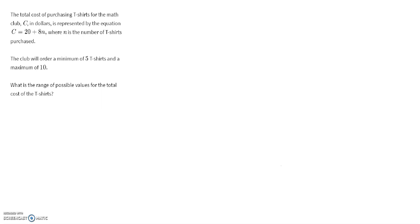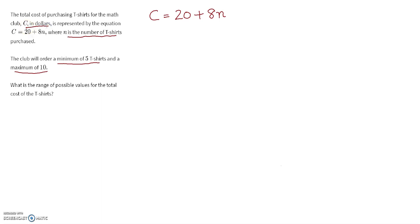The next question: the total cost of purchasing t-shirts for the math club C in dollars is represented by C equals 20 plus 8n, where n is the number of t-shirts purchased. The club will order a minimum of 5 t-shirts and a maximum of 10. What is the range of possible values for the total cost? In this equation, n represents the number of t-shirts and C represents the cost in dollars.